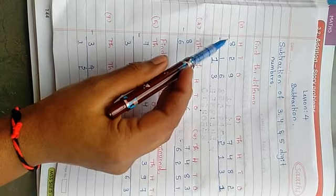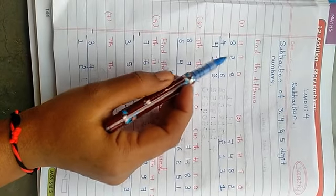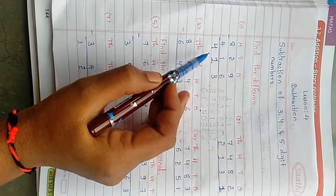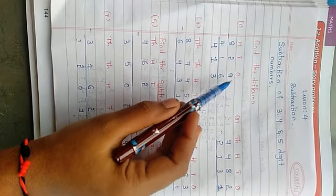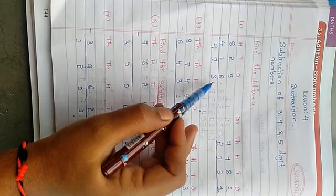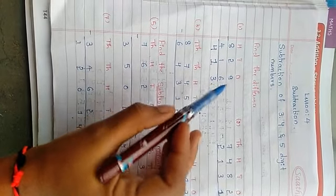See, here we have done subtraction from minuend minus subtrahend, we got the answer. If you are adding these two, you will get minuend. That means subtrahend plus difference, you will get minuend.